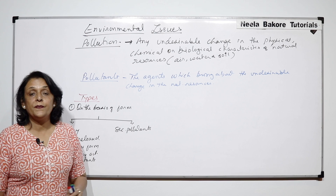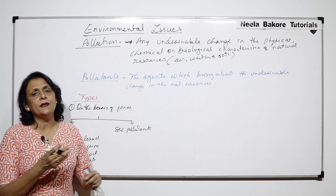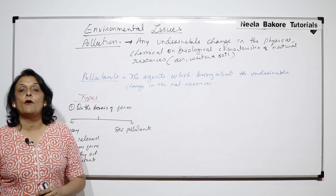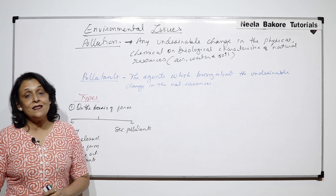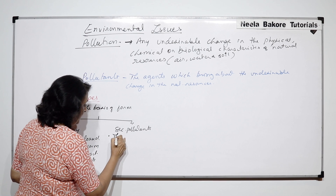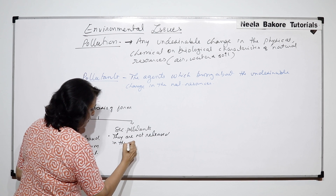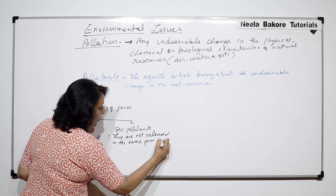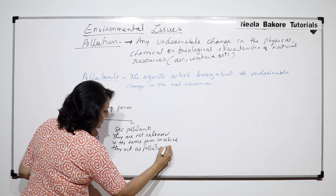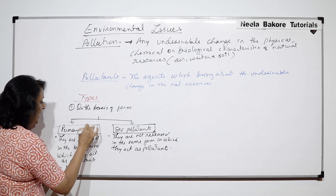Secondary pollutants are those which are not released in the form in which they act as pollutants. They are released in some other form; there are other chemicals which may or may not be pollutants, but their reactions result in the formation of a compound or substance which acts as a pollutant. So secondary pollutants are not released in the same form in which they act as pollutants.